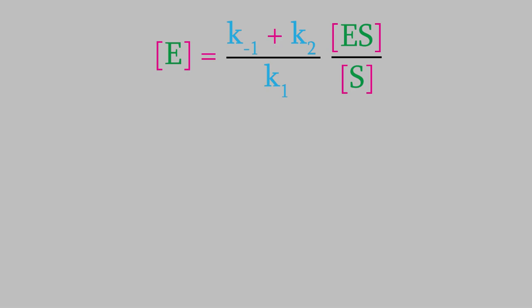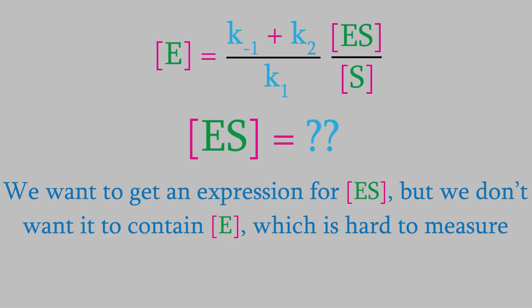But remember, what we eventually want to get is an expression for ES, the enzyme-substrate complex. In order to get a good expression for that, we need to eliminate E so that the equation will only have easy things to measure in it. So, how do we eliminate E from this equation? It turns out we can do it if we just remember that the total amount of enzyme in our solution is just a combination of the free enzyme and the enzyme that's attached to the substrate. So, in other words, E total is equal to E plus ES.